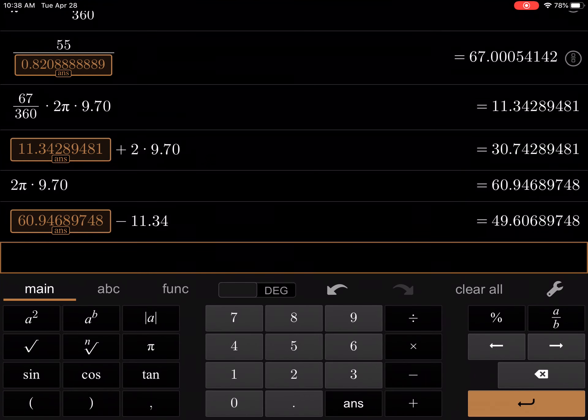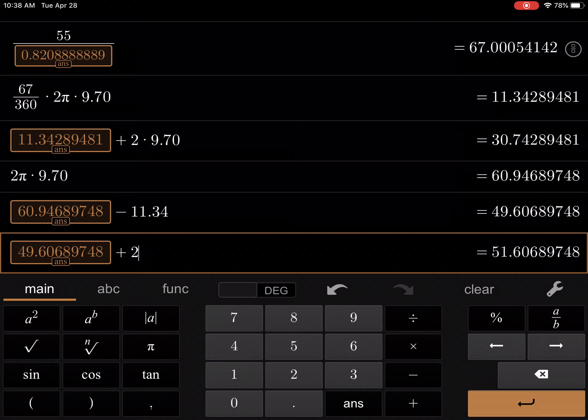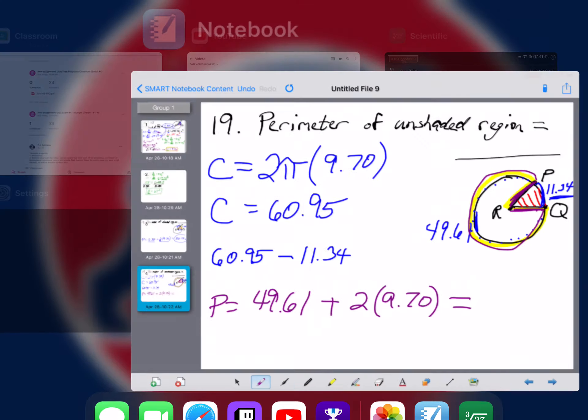Calculator, here we go. So 49.61 is my last answer, and I'm going to add to that two times the 9.70 that we've been using for our radius, and that should get us 69.01, if we were rounding that to the nearest hundredth there.